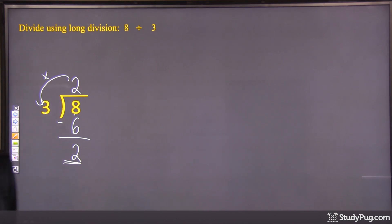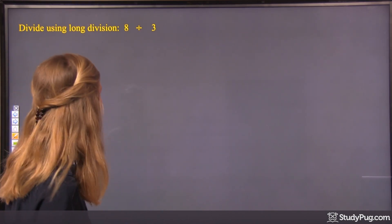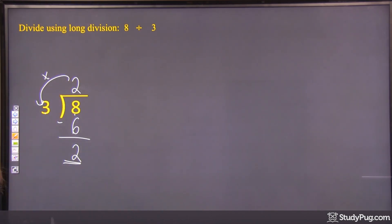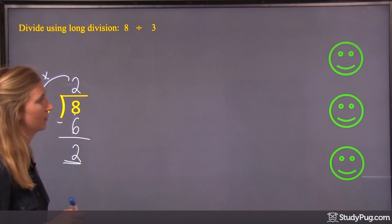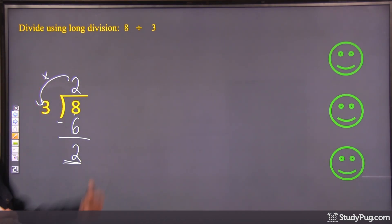This is a case of something called a remainder. Okay, so I'm going to draw a picture to help us understand this. Let's say we had 3 people. Okay? 3 smiling people.